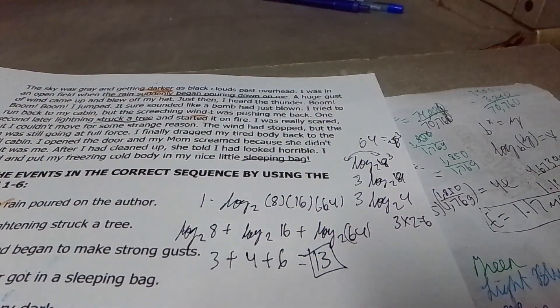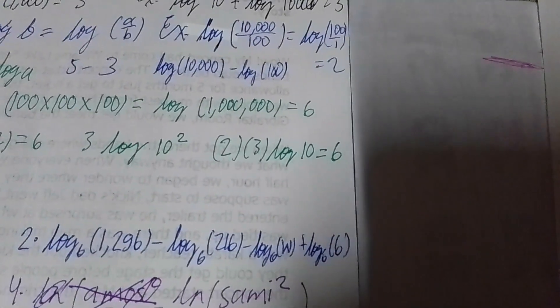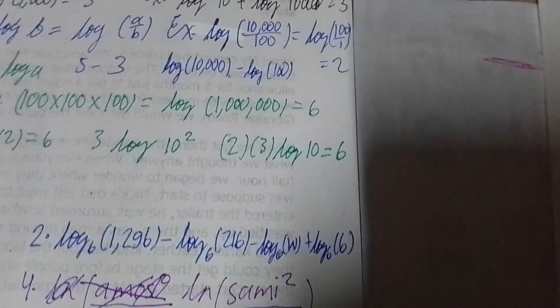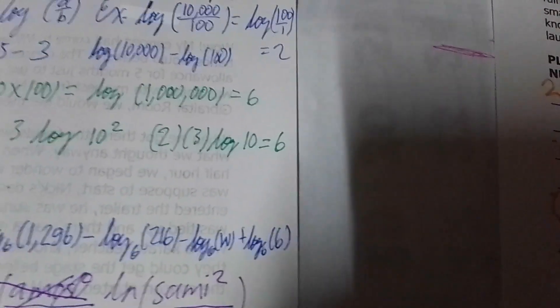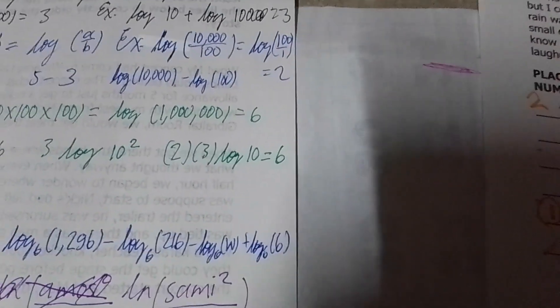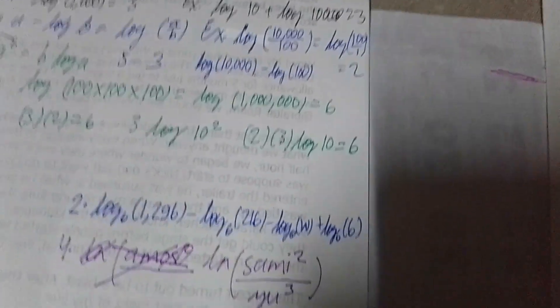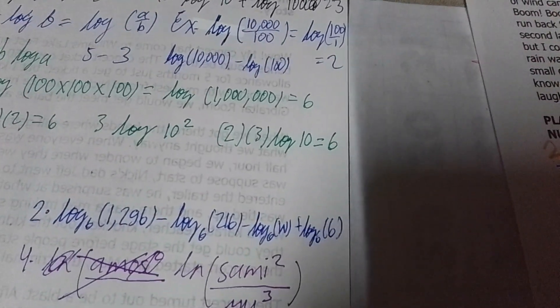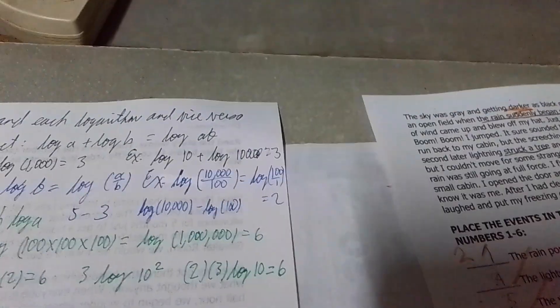Next, number 2. The problem is: log base 6 of 1,296 minus log base 6 of 216 minus log base 6 of W plus log base 6 of 6. That's already in expanded form, so we're going to write it in simplified form.